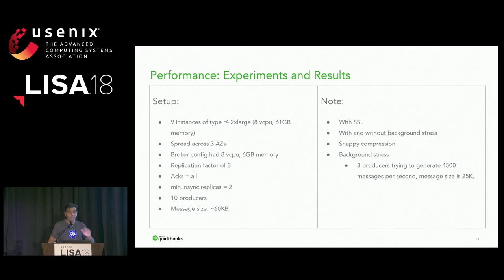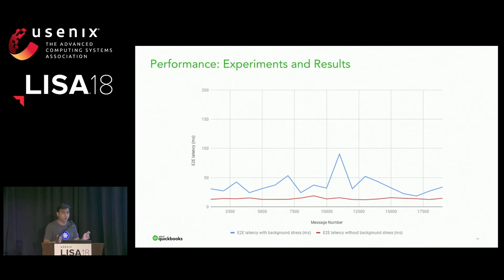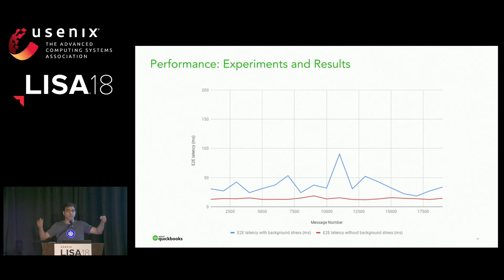We had everything running. What about performance? We were at about 35 milliseconds of end-to-end latency earlier. After adding SSL, compression, and nine brokers instead of five — with replication factor of three and in-sync replicas equal to two — the red line shows latency without any background stress. With more resources and tuned parameters, we were able to get a flatter line of about 17 milliseconds.